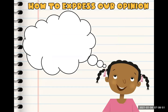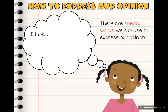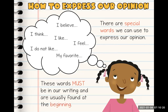There are different ways that we can express our opinion and these are special words. These special words form your statement. We're trying to get that statement and there are a couple of words you can use when trying to express your opinion. You can say things like: 'I think,' 'my favorite,' 'I believe,' 'I like,' 'I do not like,' or 'I feel.' And these words must be in your writing — they're usually found at the beginning.